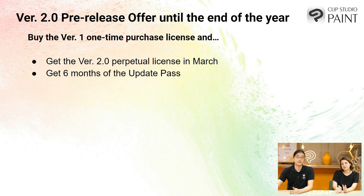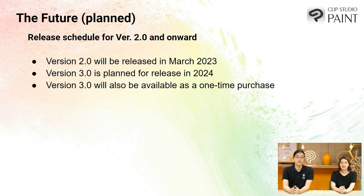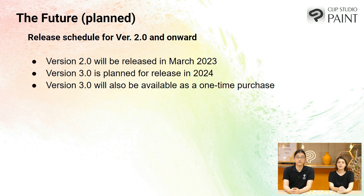As just mentioned, if you buy Clip Studio now, you get six months free of the update pass to try out. Here is what we posted about the release of version 3.0 — a lot of people have been wondering about when it would come out. It was in the announcement and it will also be available as a one-time purchase. So you can get version 2.0, get the updates in between, or get version 3, depending on what kind of purchasing plan you'd like.